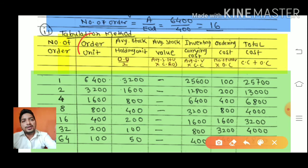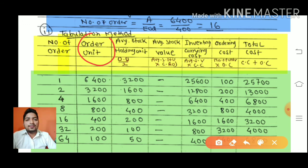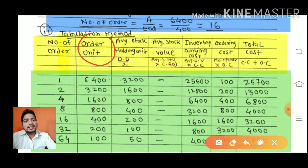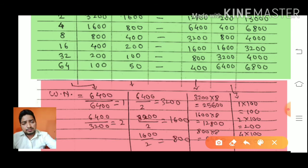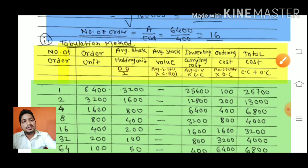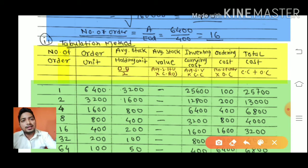The second column is order units. To calculate order units, take annual consumption divided by the number of orders. The third column is average stock holding units, which is order units divided by 2. We fill each row for different numbers of orders: 1, 2, 4, and so on.